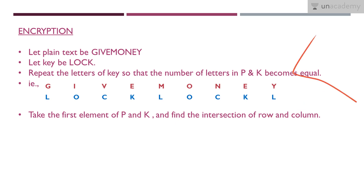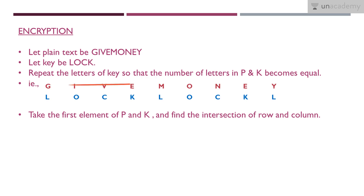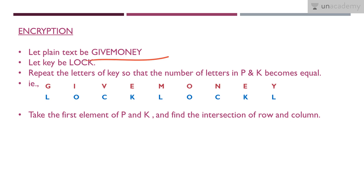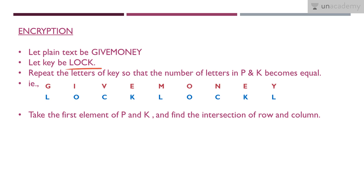The condition is to repeat the letters of the key so that the number of letters in P (plain text) and K (key) become equal. My plain text 'give money' has 9 letters, and my key 'lock' has only 4 letters. So I need to repeat the letters of the key cyclically so that the number of letters in both P and K becomes equal.